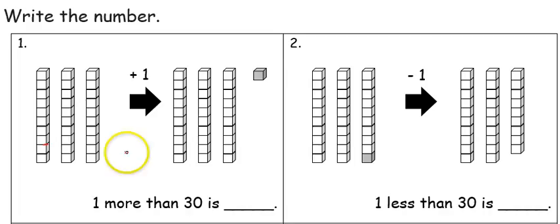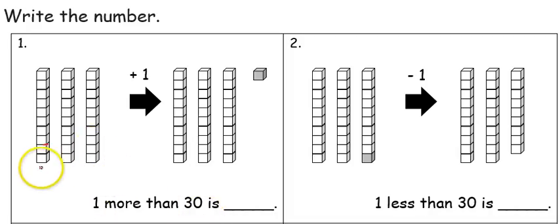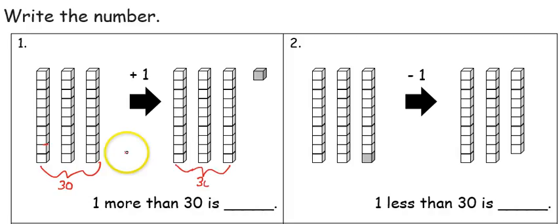In my first problem, I have three sticks. There's ten cubes in each stick. The problem is asking what is one more than thirty. The first picture shows the thirty. The second picture shows the thirty again and the one more. So if I have thirty and one more, I have thirty-one altogether.